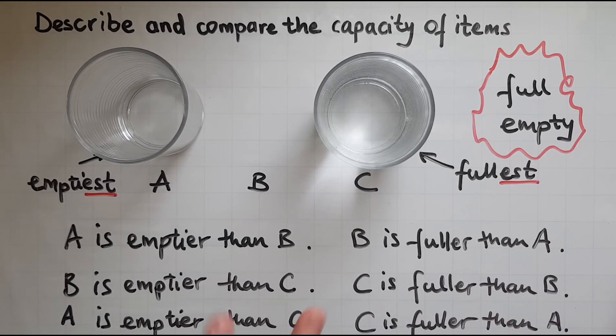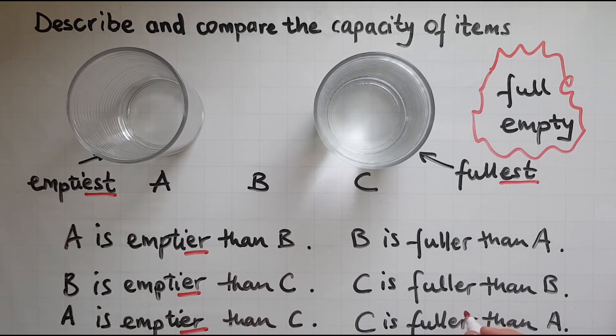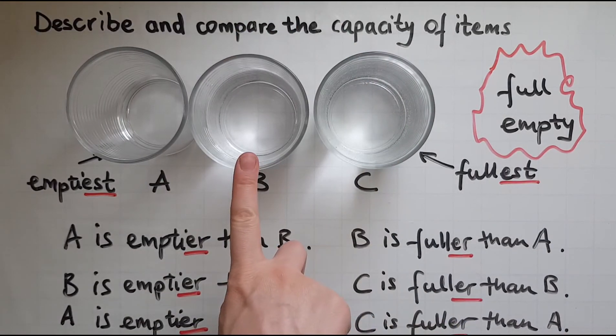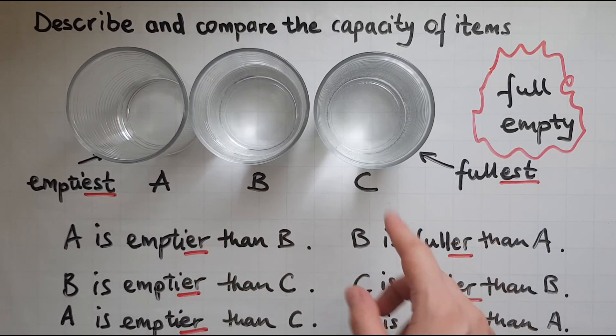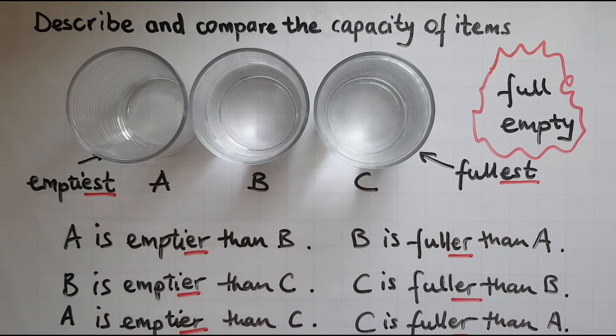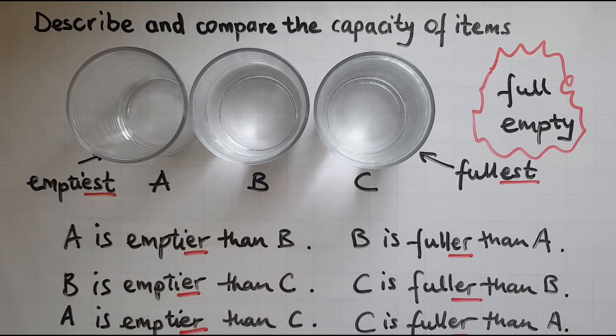So when we're comparing two of the items we say emptier, ending with -er, just like in other comparisons: fuller. Whereas when we compare three of the items or more we say C is the fullest. So it's fuller than B, fuller than A. A is the emptiest because it's emptier than B and emptier than C.